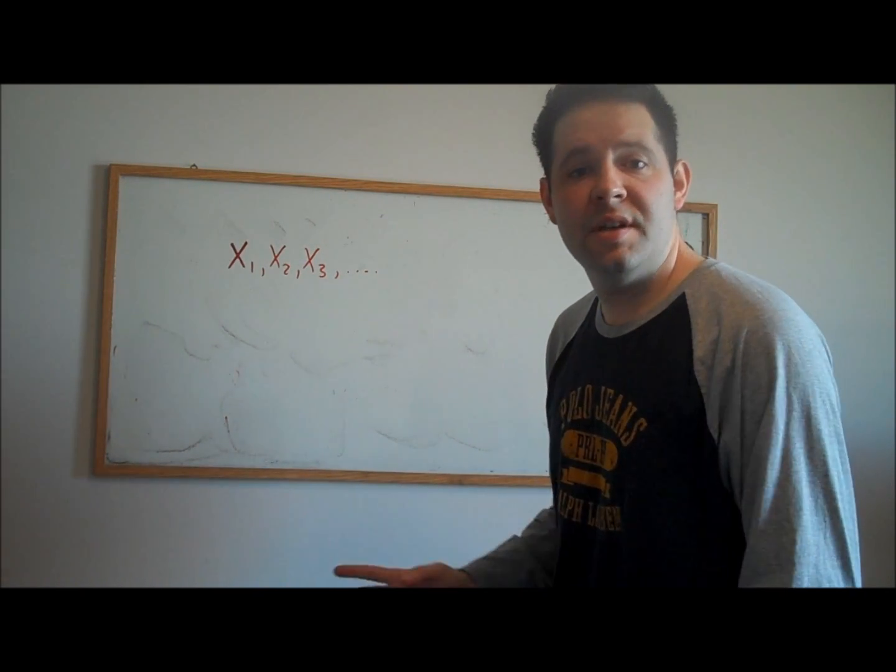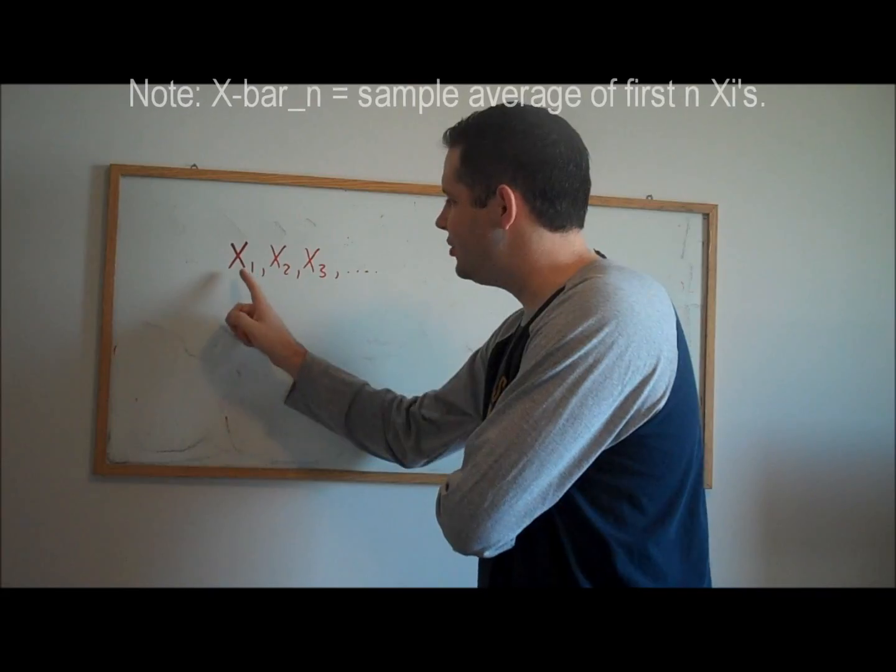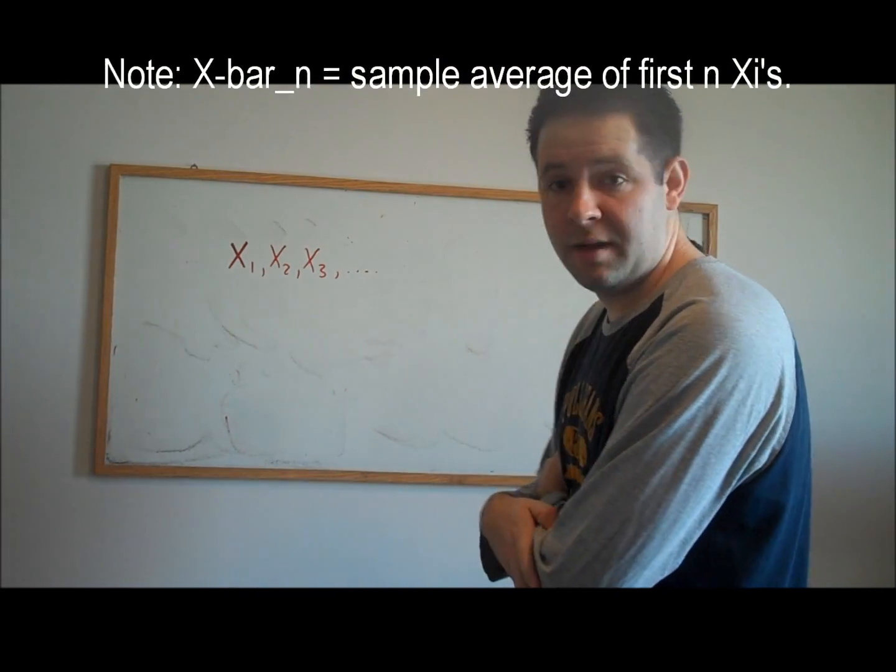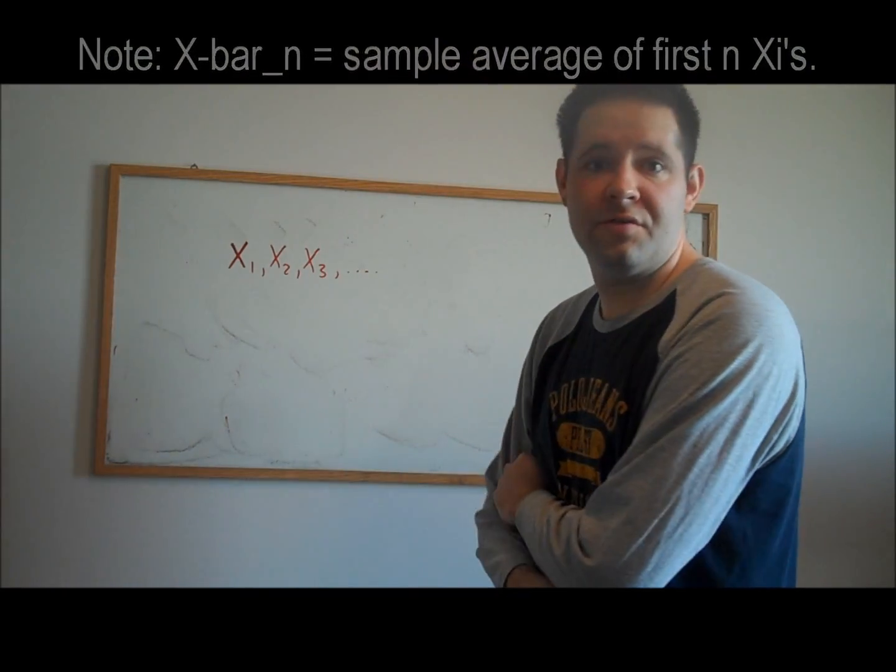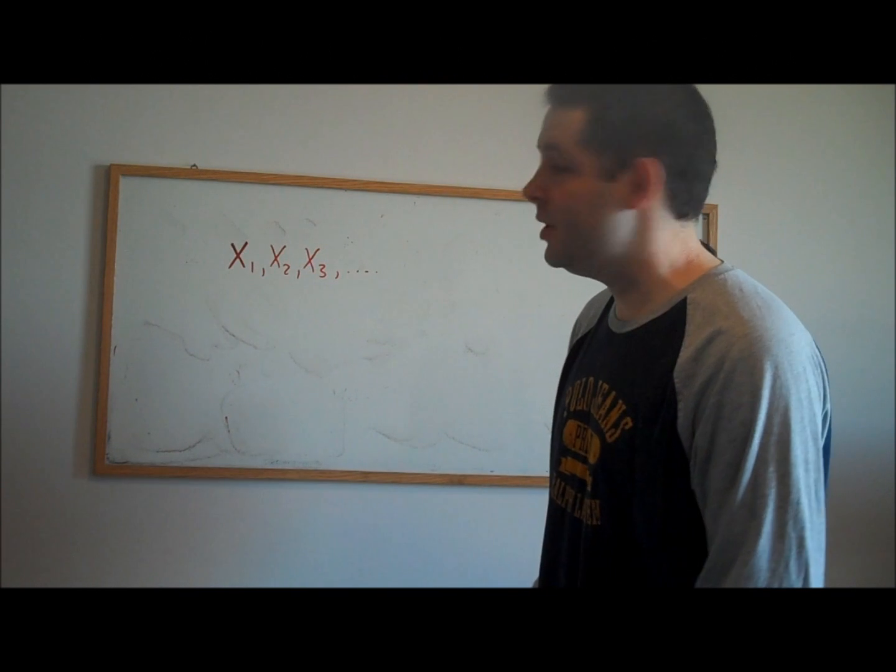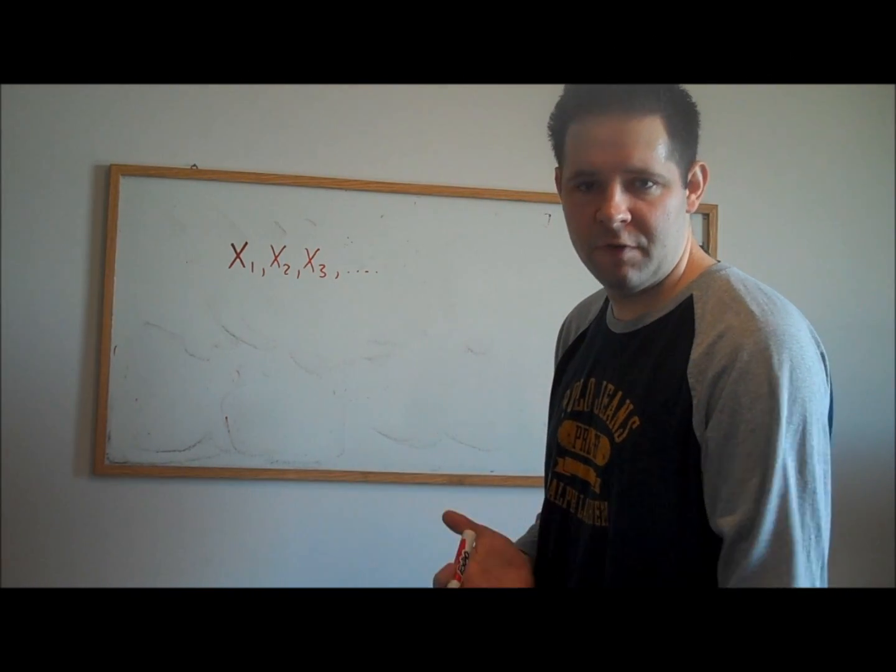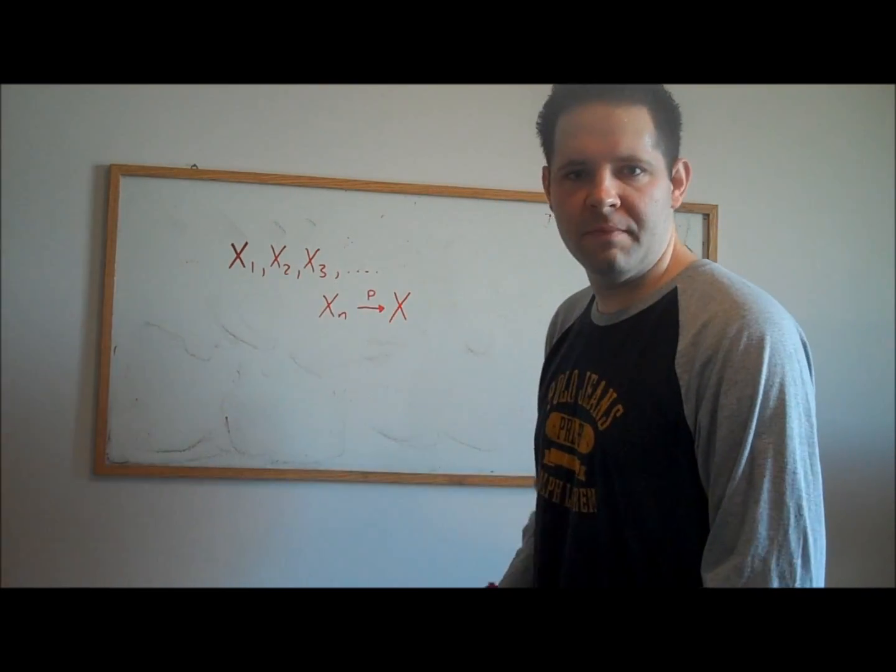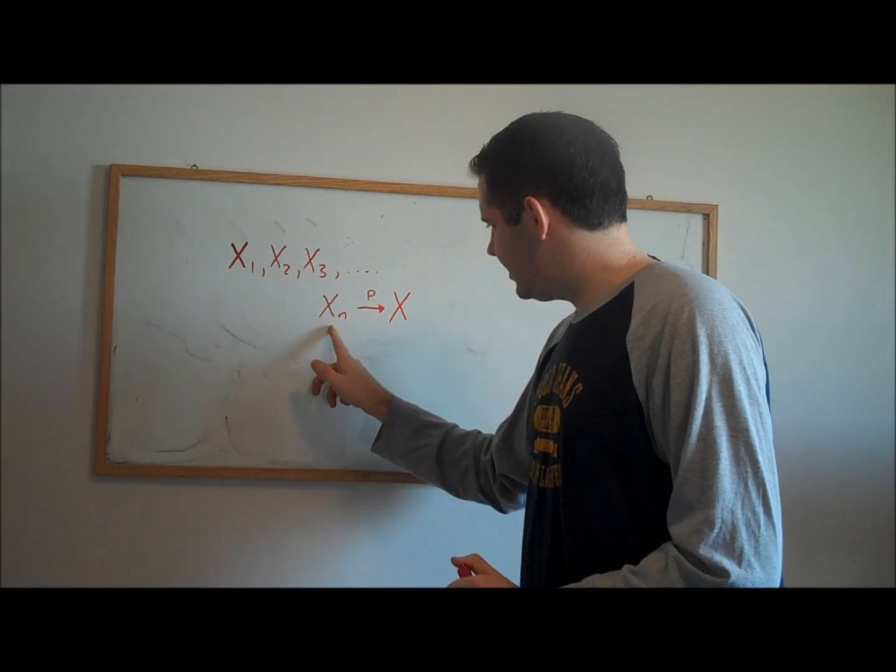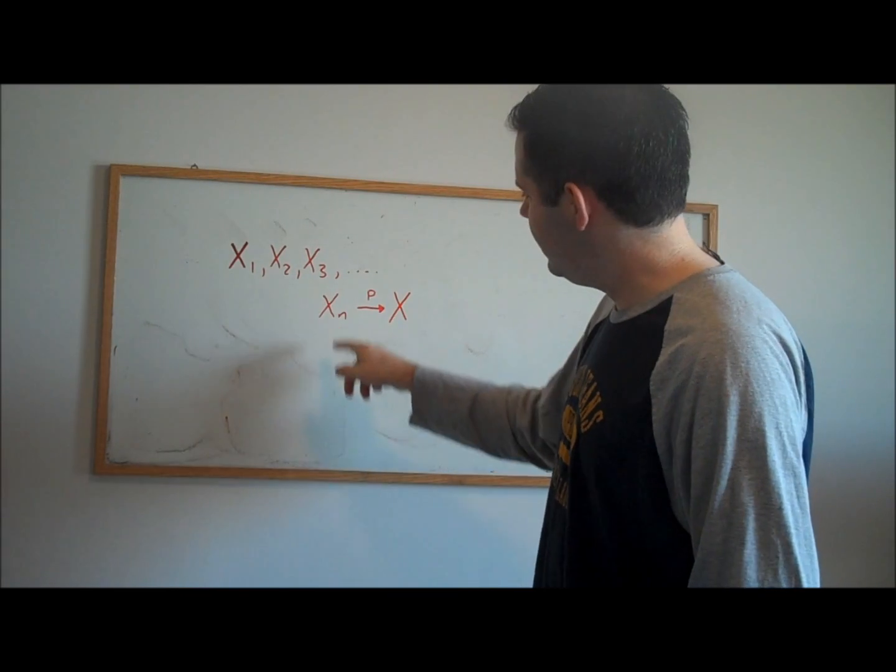Let's start with a sequence of random variables. Each element of this sequence is a random variable, has a probability distribution, so we can compute probabilities. Our goal is going to be to define something called convergence in probability. This is how we denote convergence in probability.